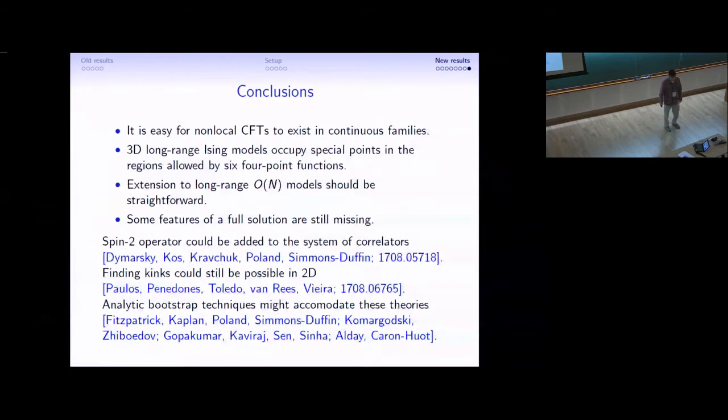Also, one thing I didn't mention at all was what happens in two dimensions. And, there, it turns out that it's not possible to find kinks anymore. The bounds in two dimensions have some interesting properties, which makes it harder to find kinks. It might just be that there are so many more theories in two dimensions that the ones we're looking for are getting lost in a larger haystack. But, again, we haven't tried bootstrapping a spin-2 operator in the external correlator.